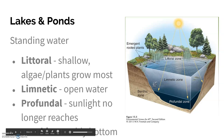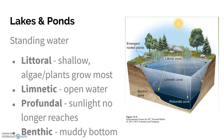The littoral region is basically the shoreline — it's very shallow and has the most growth of algae and emergent plants, which are plants that can grow in the water. The limnetic zone is the region where light can still reach. Once it's too dark — too far for light to penetrate — we call that the profundal zone. And then the benthic zone is the very bottom, the muddy floor.